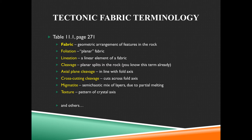Foliation is planar fabric. Think of sheets of paper in a folio, a pad of paper — they're planar sheets, and the fabric is that they're layered, all oriented the same way. A lineation is a linear element of fabric. Like if you have a bunch of pencils in a pencil box, you have lineations, because each pencil is a linear type object.